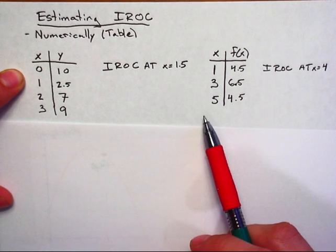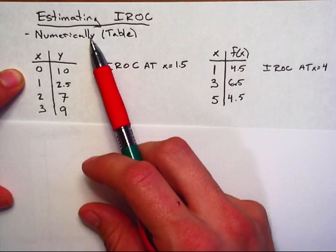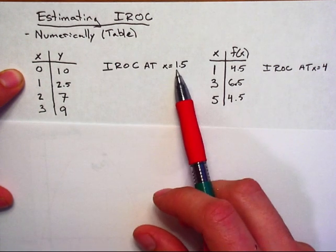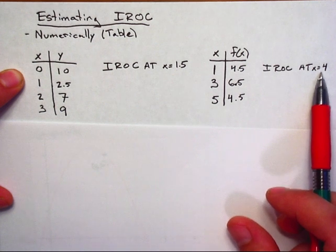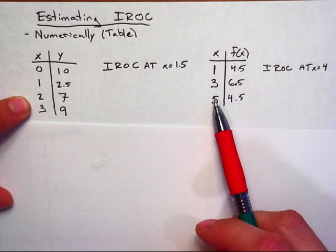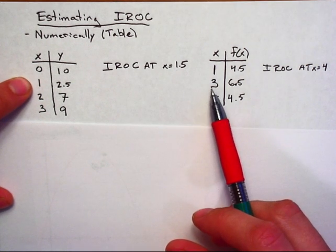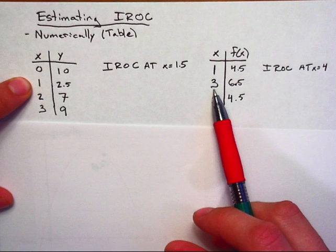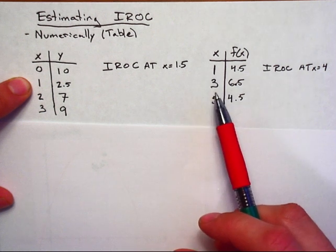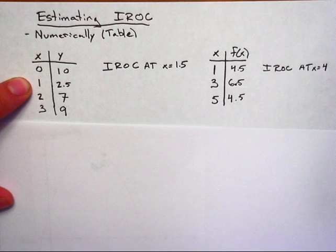And that's going to be the case for every single one of these examples where you're asked to estimate the IROC numerically. The value you're going to be asked to estimate at is always going to be found right in the middle of these two. Could it be at one of the x values? Sure. And you use a similar thought process that way, but for my tests, my assessments, and everything else, it will always be in the middle. So that's the way we'll look at it.